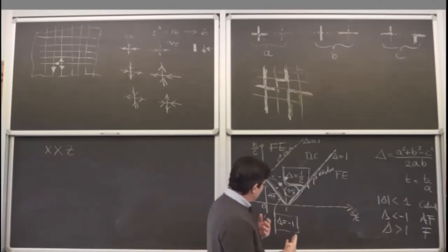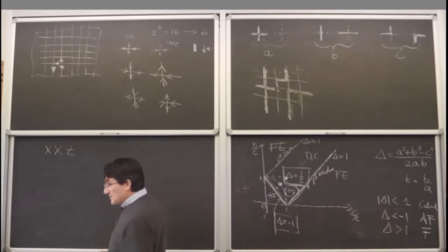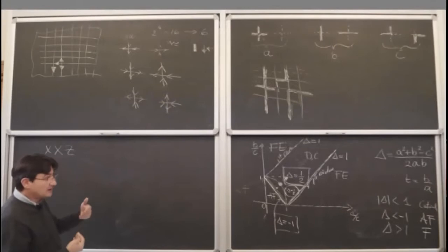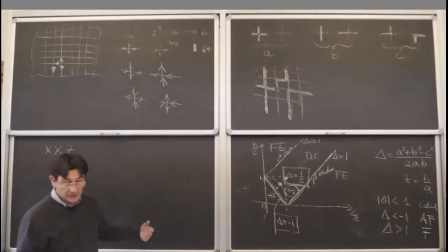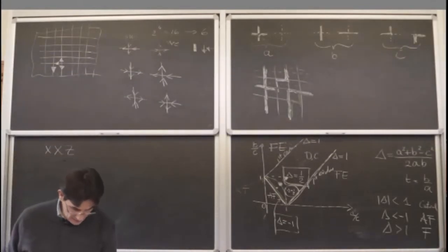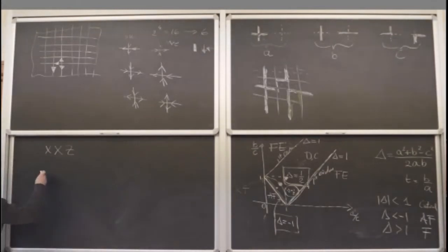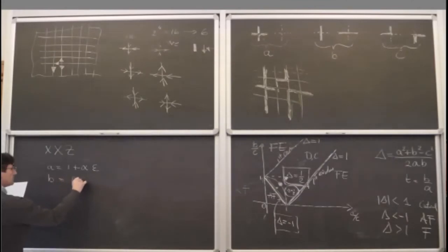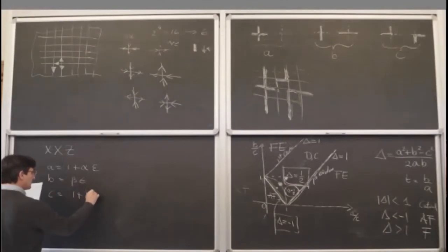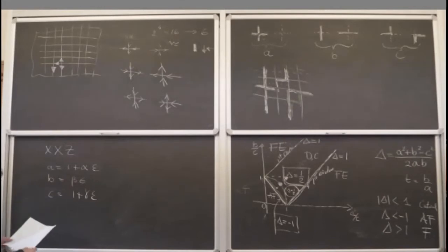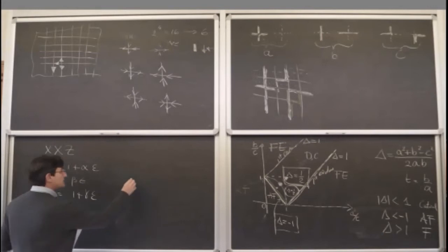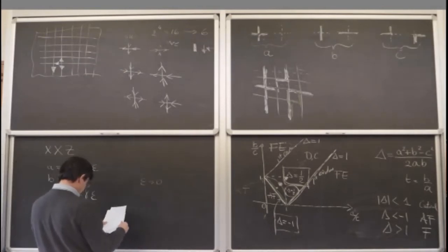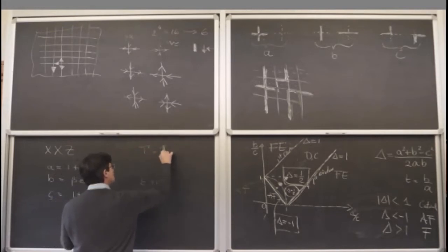There is a procedure called the Hamiltonian limit: you can go from the six-vertex model in a particular limit to the XXZ chain. It is a limit from a lattice to a continuum in the discrete time direction, so you can only go in one direction. For example, if you put a equal 1 plus alpha epsilon, b equal beta epsilon, c equal 1 plus gamma epsilon, and then send epsilon to zero, you can expand the transfer matrix in epsilon.